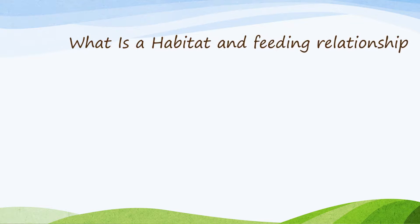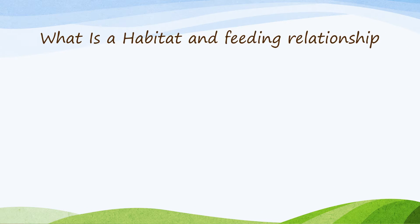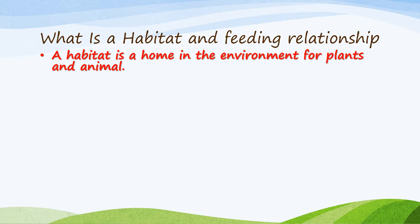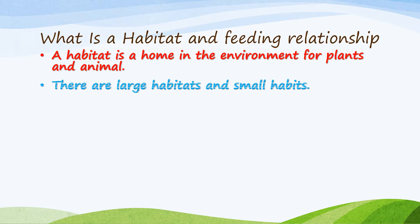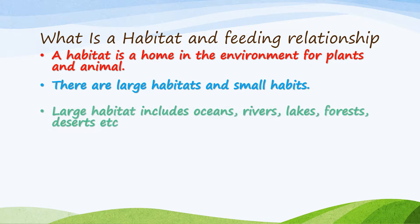Now what is a habitat and a feeding relationship? A habitat is a home in the environment for plants and animals. Where plants and animals live, that is known as a habitat in the environment. The plants and animals are together — they live together in a feeding relationship in a habitat.